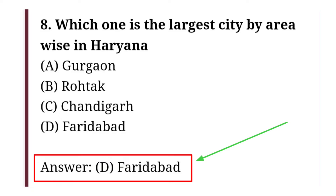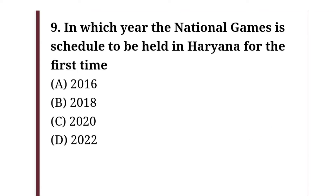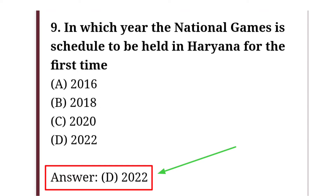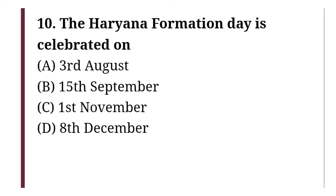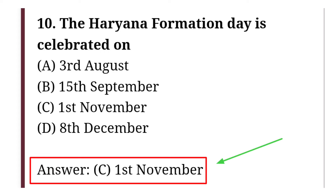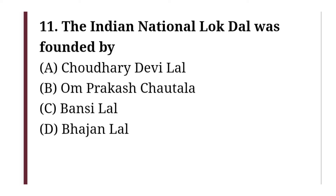In which year are the National Games scheduled to be held in Haryana for the first time? The correct answer is option D, that is 2022. The Haryana Formation Day is celebrated on — the correct answer is option C, that is 1st November.